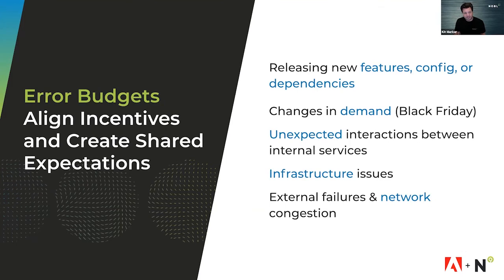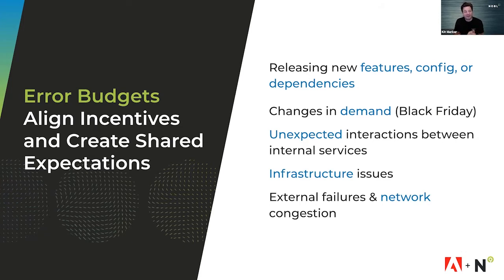An error budget is an allocation that you've defined up front about how much error is acceptable in your system. Instead of having one team fighting to make changes and another team fighting for stability, the question becomes: how do we wisely spend the error budget together to achieve the right kind of result?